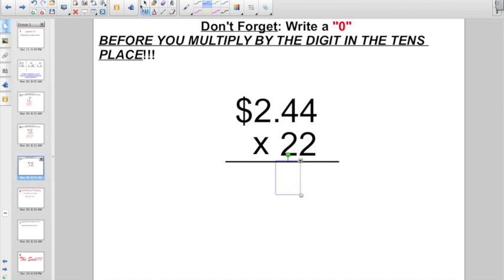One more here. We're going $2.44 times 22. Should I do a little bit about covering up? Or are we comfortable enough just to know we're not dealing with this digit yet? We're going to start over here. 2 times 4, that's going to give us 8. 2 times 4, again, that's going to give us 8. And lastly, 2 times 2, that's going to give me 4.